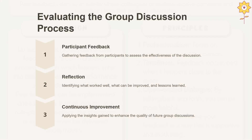Evaluating the group discussion process. Participant feedback is very important — gathering feedback from participants helps to assess the discussion. Reflection involves identifying what worked well and what can be improved, including lessons that were learned. Continuous improvement means applying the insights gained to enhance the quality of future group discussions, so that errors from this particular discussion can be avoided next time.